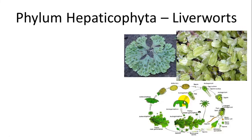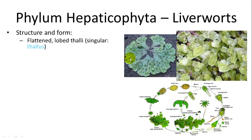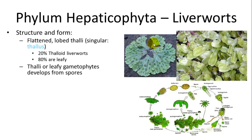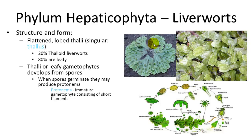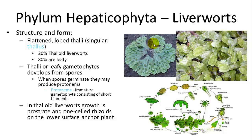Starting with hepaticophyta, or the liverworts, their structure features a flattened lobed thallus. About 20% of liverworts are thaloid, while 80% are leafy. These thalli or leafy gametophytes develop from spores, and when they germinate they produce a protonema — an immature gametophyte consisting of very short filaments. In thaloid liverworts growth is prostrate, with one-cell rhizoids on the lower surface anchoring the plant. They grow along the ground and do not grow vertically.